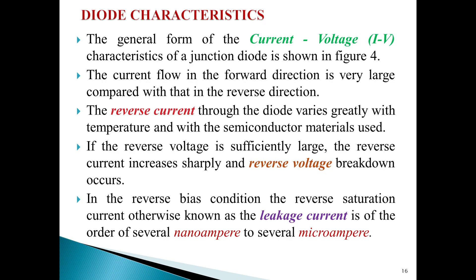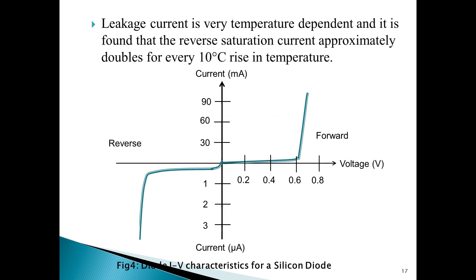The characteristics of a diode: the general form of the IV characteristics of a junction diode is as shown in fig 4. The current flow in the forward direction is very large compared to that in the reverse direction. The reverse current through the diode varies greatly with temperature and with the semiconductor materials used. If the reverse voltage is sufficiently large, the reverse current increases sharply and reverse voltage breakdown occurs. In the reverse bias condition, the reverse saturation current, otherwise known as the leakage current, i_s, is of the order of several nano-amperes to several micro-amperes. The leakage current is very temperature dependent, and it is found that the reverse saturation current approximately doubles for every 10 degrees centigrade rise in temperature.